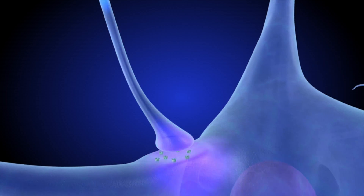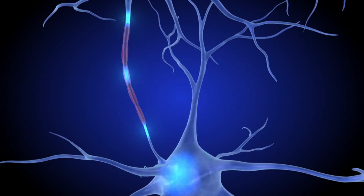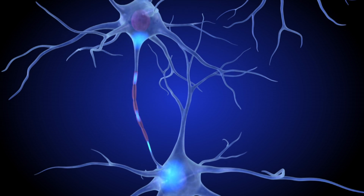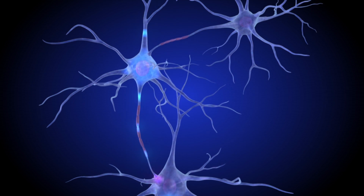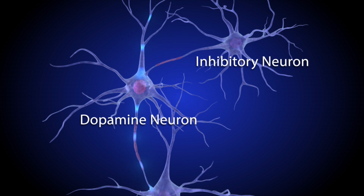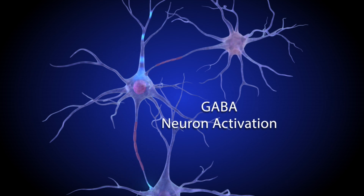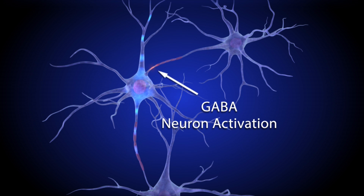Dopamine transporters in the presynaptic neuron are not the only things that control how much dopamine is released or how often. Other nearby neurons also play important roles in regulating neural signals. For example, an inhibitory neuron near the dopamine presynaptic cell can reduce the amount of dopamine delivered to the synapse by releasing the neurotransmitter GABA. Inhibitory GABA signals change in response to local brain activity, adjusting the amount of dopamine released by stimulated dopamine neurons.